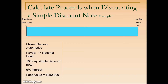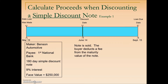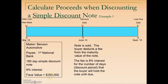Here we have the maker and the payee with a 180-day simple discount note at 9% interest and a face value of $250,000. The loan started on March 19th, and 180 days later it is due September 15th. On June 14th, the holder of the note, First National Bank, decides to sell the note to a bank. Since this is a discount note, the maturity value is the face value of $250,000. The bank will charge a discount rate of 8% for the number of days remaining until the maturity date — which, as shown on the slide, amounts to 93 days.